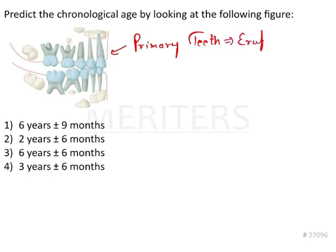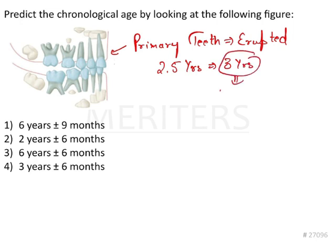The eruption of the primary dentition generally takes place by 2.5 years to 3 years of age, and by the third year all the teeth come into occlusion as well. The posterior molars will be coming into occlusion as well.